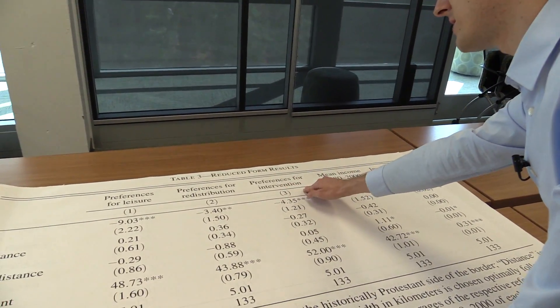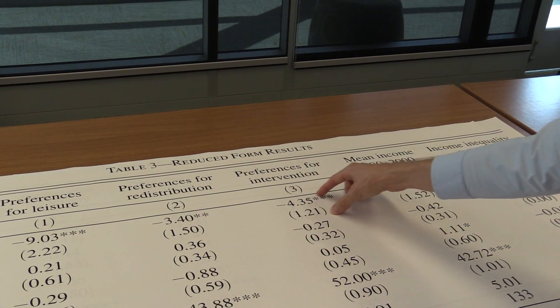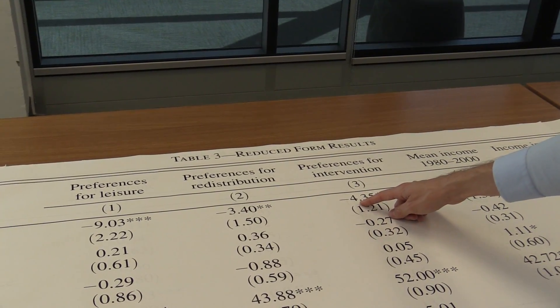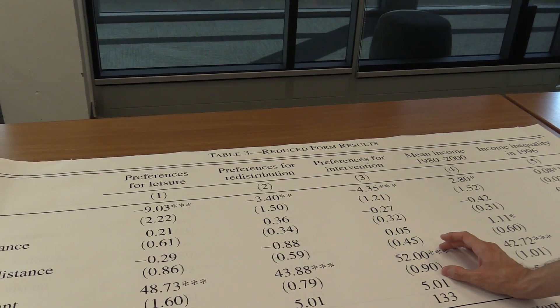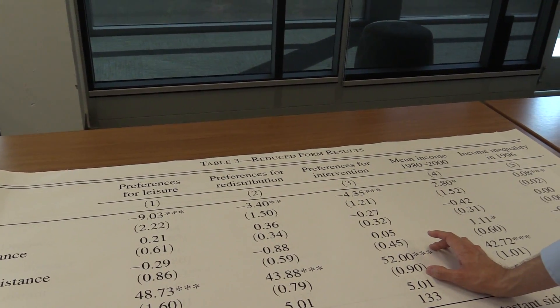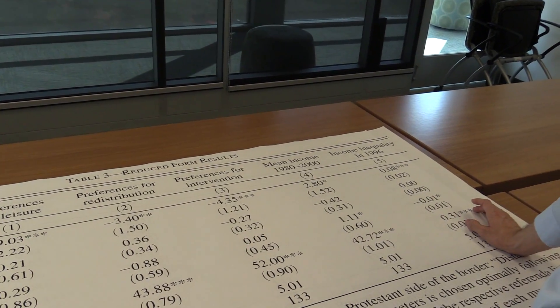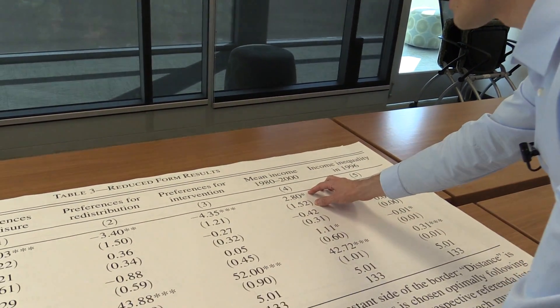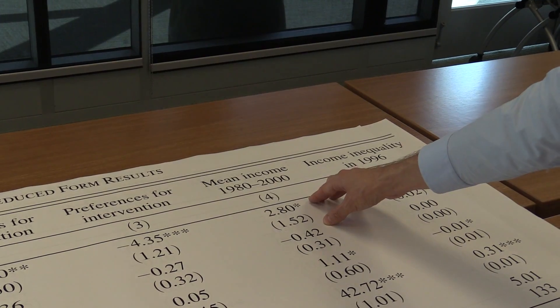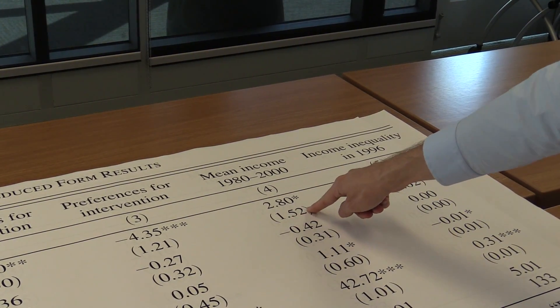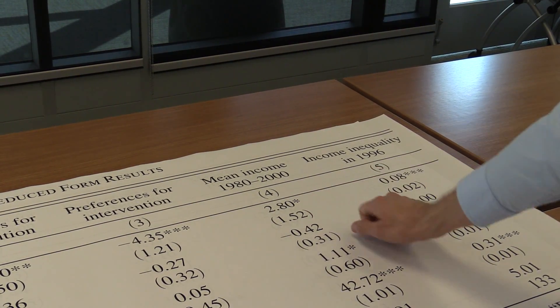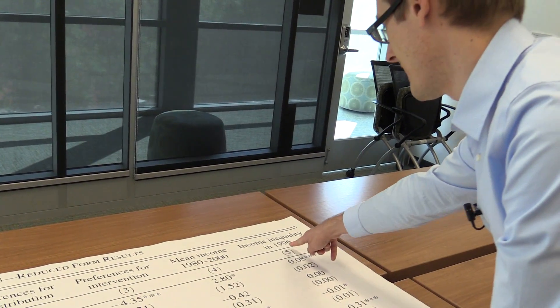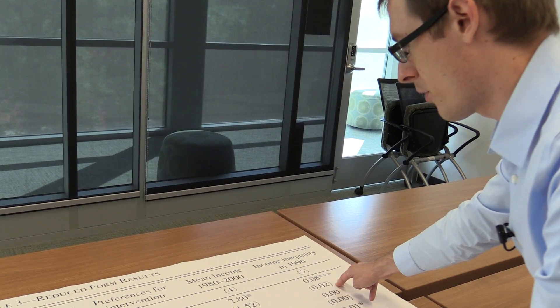Our third outcome variable was preferences for government intervention. And again, over here in this first row we see the same thing we saw in the picture, minus 4% treatment effect for being Protestant. And then the relative to Catholics having a baseline of about 52%. Now if we look at these final two columns, these we didn't see the pictures of, but these are other outcome variables they analyzed. So mean income, it looks like being on the Protestant side actually increases your average income, and then although the effect's just a little bit marginally statistically significant, so this is a pretty big standard error.